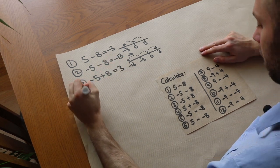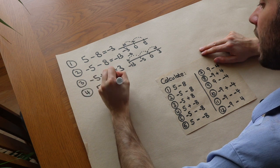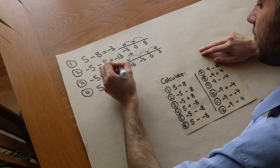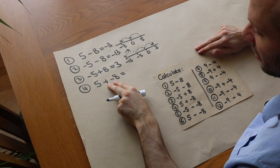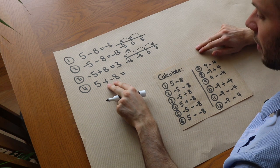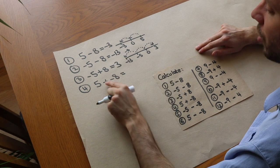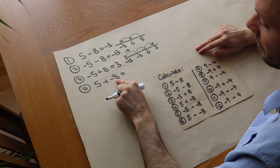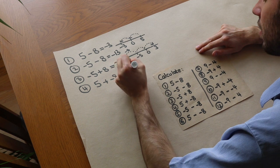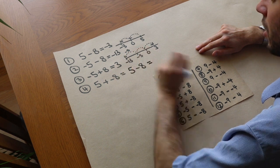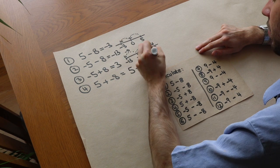What about five plus negative eight? Remember, if you have a plus and a minus symbol next to each other that can be replaced with a minus. You're adding a negative number so you're instead subtracting. So it's five minus eight, which we already know is minus three.